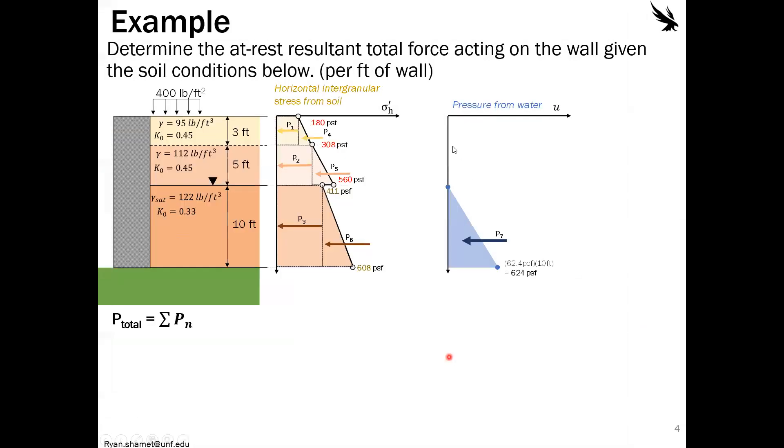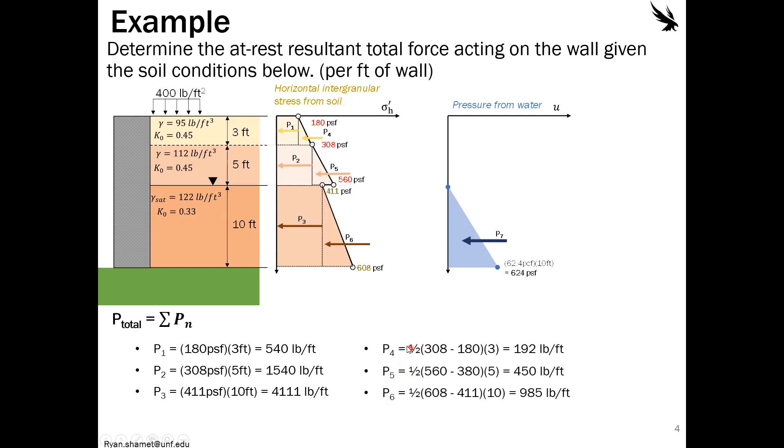All right, so to actually calculate all these things, I'm going to throw it up in this top left corner here. We need to find the total force. So we're just going to have to calculate P1, P2, P3 all the way through seven, and then take the summation of those. I'll show P1 here and go through it. You can see this is pounds per square foot is the stress and then the height is three feet. So what we're left with is 540 pounds per foot, which makes sense because this is a resultant force per linear foot of wall coming in and out of paper. And then we do the same for two and three.